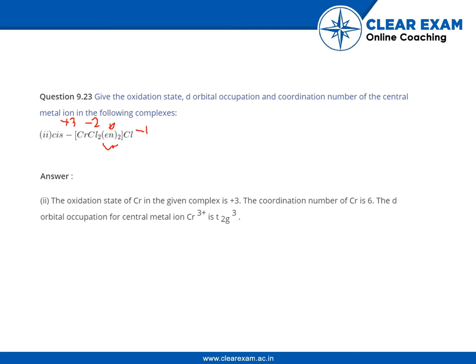The coordination number is again 6, as en is a bidentate ligand so it will contribute 4, and Cl2 are present, so 2 plus 4 giving rise to 6. Now the orbital occupancy - its ground state configuration is 4s1 3d5.